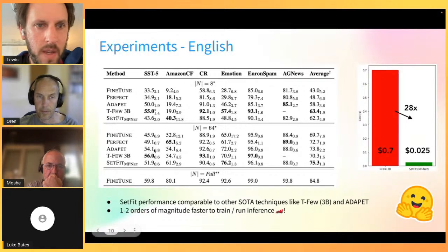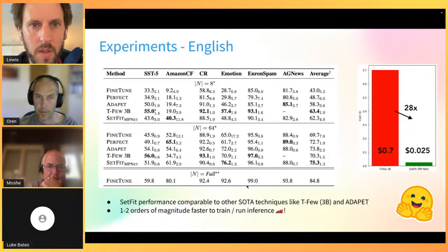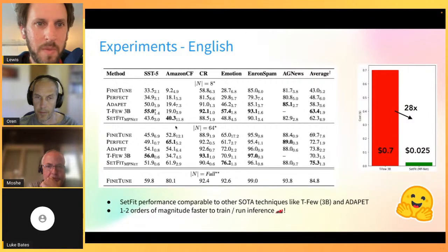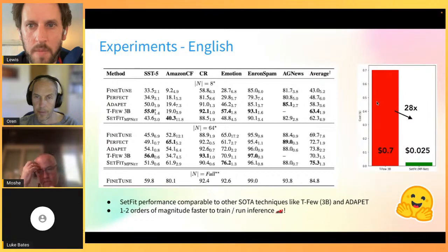With 8 or 64 labeled examples, for some datasets you can get reasonably close to fine-tuning on the full corpus. For SST-5, you're around 10 points behind at 8 examples, and quite close with 64. This is even clearer for datasets like AG News and Enron Spam. The hardest tasks remain counterfactual reasoning, where a significant gap still exists - SetFit is not a silver bullet for every problem.